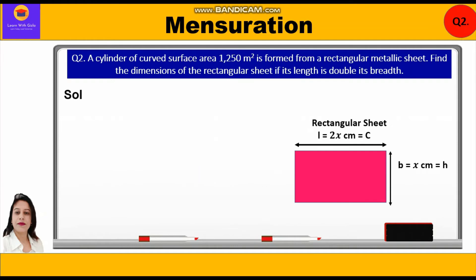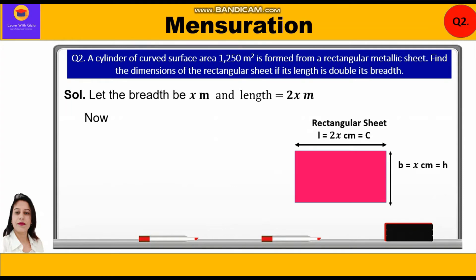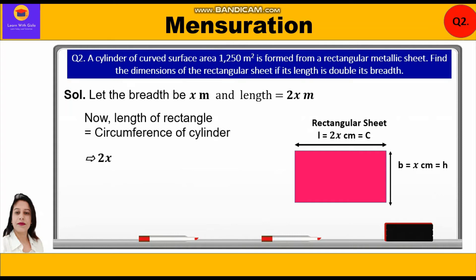Let the breadth be x metres and length be 2x metres, since length is double the breadth. The length of the rectangle equals the circumference of the cylinder, so 2x = 2πr.